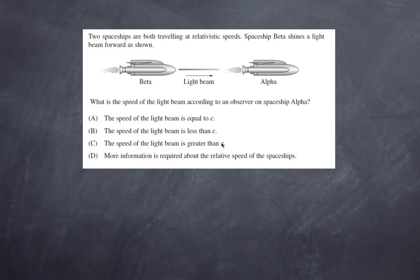Let's start with the first one. Two spaceships are both traveling at relativistic speeds. Spaceship beta shines a light beam forward as shown. What is the speed of the light beam according to the observer on spaceship alpha? Is it: a) the speed of the light beam is equal to c, b) less than c, c) greater than c, or d) more information is required about the relative speeds of the spaceships?